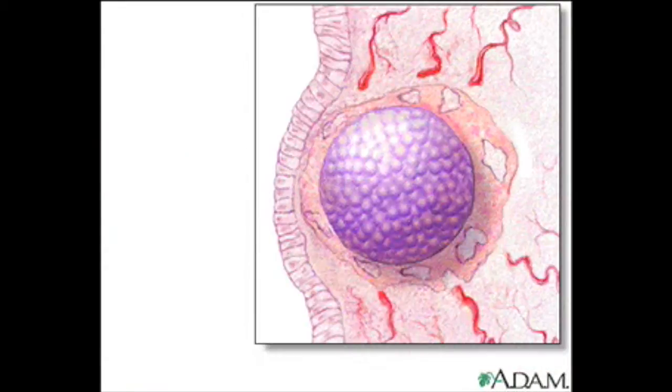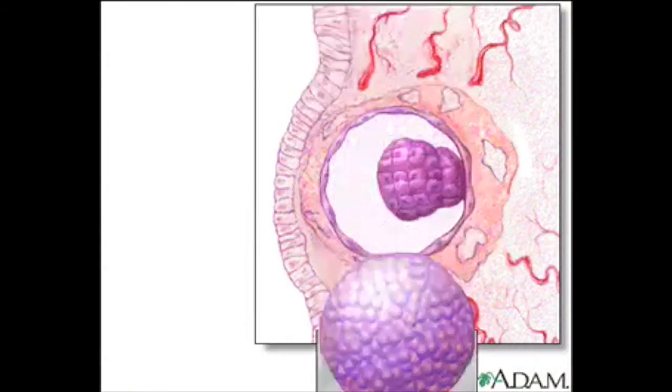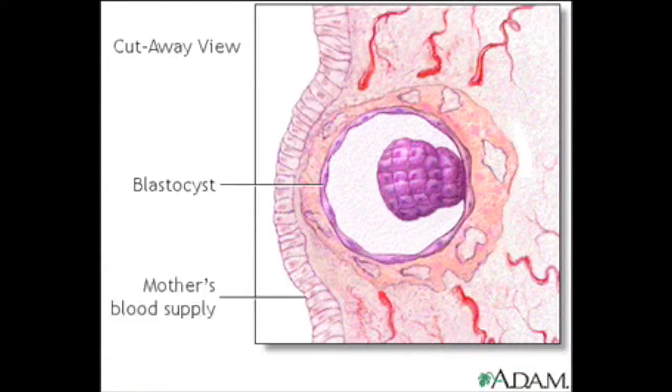If we take a closer look at the uterus, you can see that the blastocyst actually buries itself in the uterine lining, where it will be able to get nourishment from the mother's blood supply.